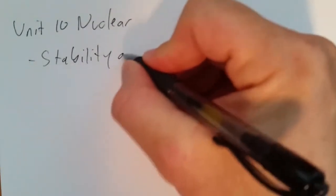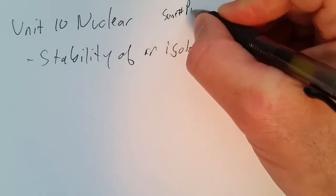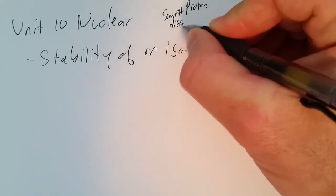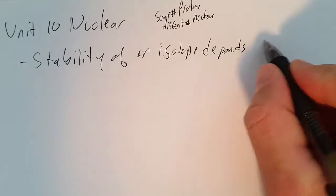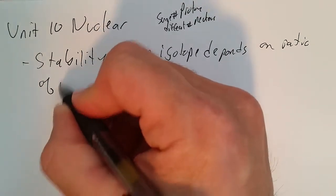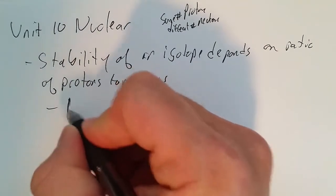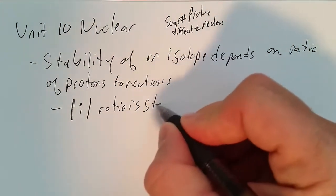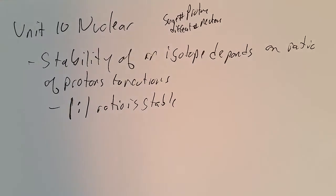Unit 10, Nuclear Chemistry. Stability of an isotope—remember, isotope is same number of protons, different number of neutrons—depends on the ratio of protons to neutrons. Usually a 1 to 1 ratio is stable. The further you get from a 1 to 1 proton to neutron ratio, the more likely an atom will be unstable.